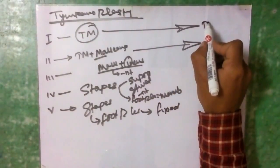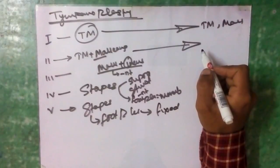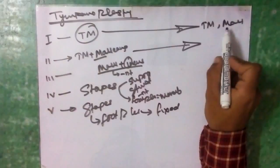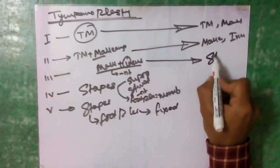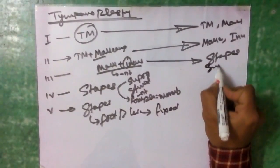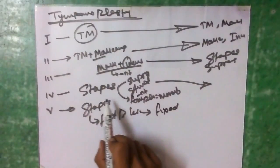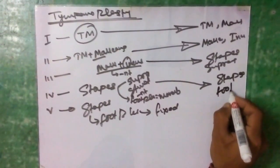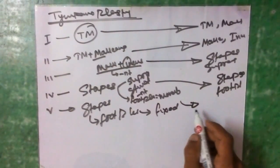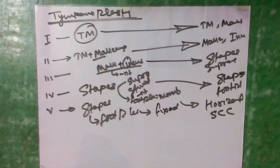Regarding graft placement in tympanoplasty: if the tympanic membrane is perforated, the graft is placed into the normal tympanic membrane portion or the malleus region. If the malleus is also eroded, the graft can be placed into the normal malleus portion or the incus region. If both malleus and incus are absent, the graft rests on the stapes superstructure. If the stapes superstructure is also absent, the graft is placed on the footplate. If the footplate is fixed, the graft is placed on the horizontal semicircular canal.